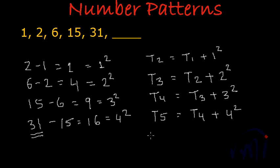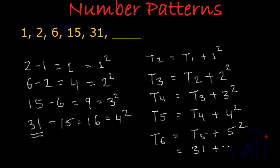So what will be t6? t6 will be the fifth term plus 5 squared. The fifth term is 31 and 5 squared is 25, so our sixth term will be 56.